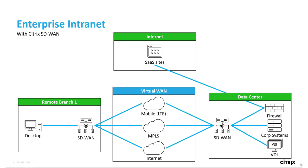Citrix SD-WAN creates secure virtual tunnels across all available paths between SD-WAN instances, such as MPLS, internet, or mobile LTE networks. They measure path characteristics and communicate regarding their view of the network in real time. Then they identify traffic flows and route them on a per-packet basis across the optimal path with knowledge of the quality each can offer, and reassemble flows for delivery at their destination, providing the best possible application user experience.